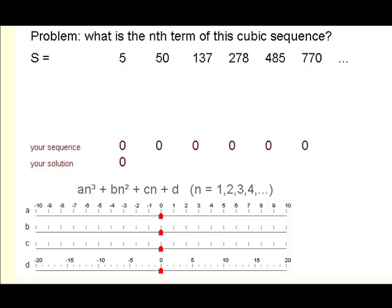Well, there we've got a cubic sequence. The nth term of that sequence is of this form: an³ + bn² + cn + d. We have to work out the values of a, b, c, and d to be able to write down the nth term in that form.